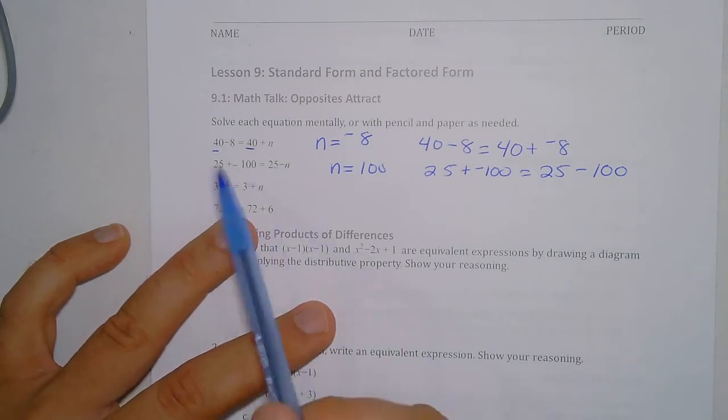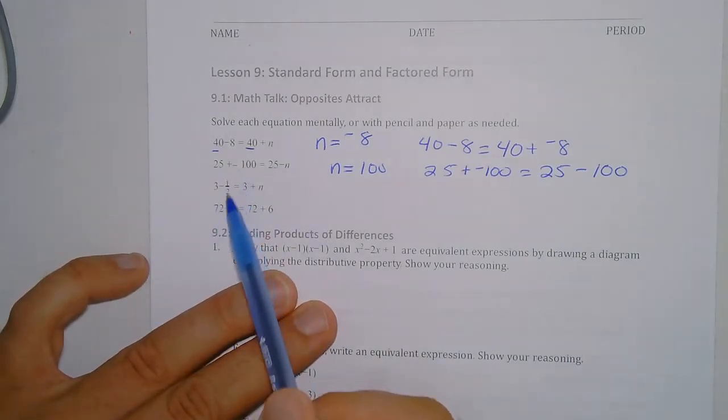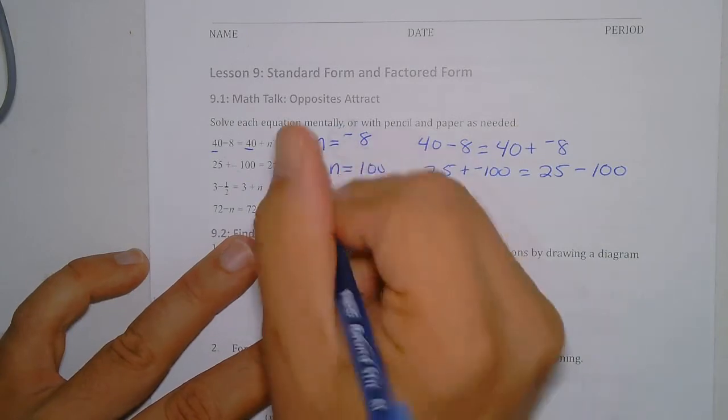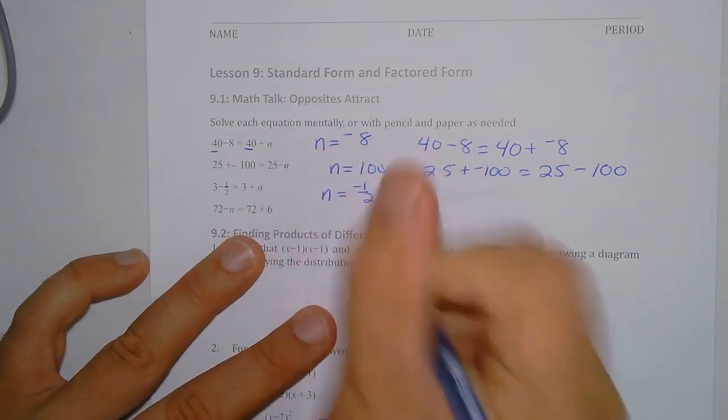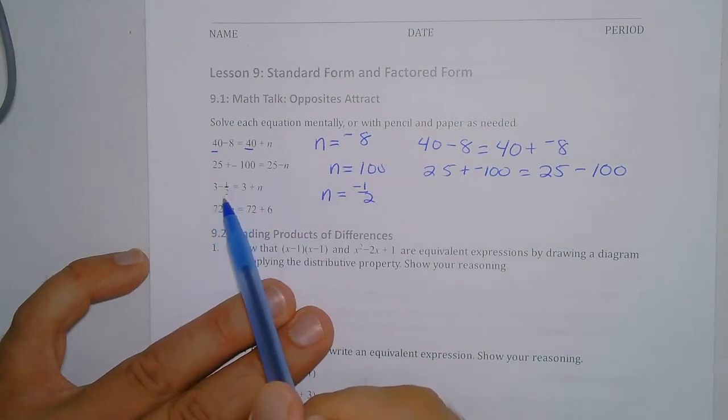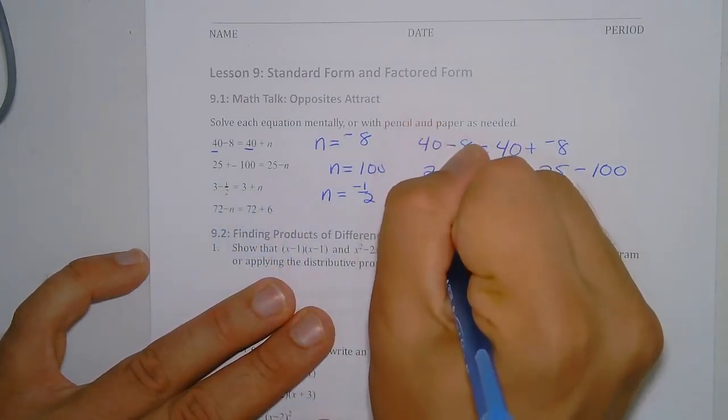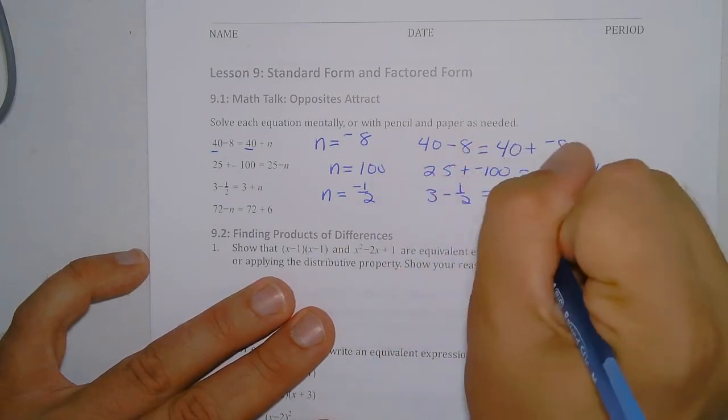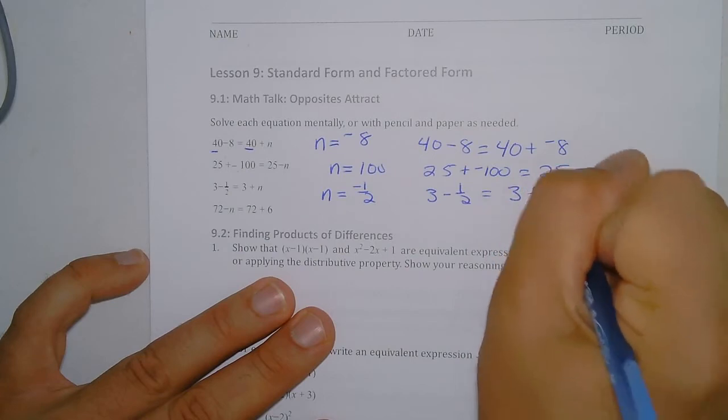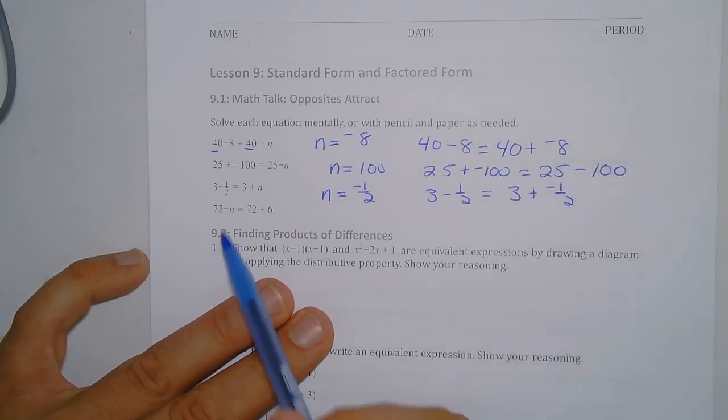So here, 3 - 1/2 is the same as 3 + n. Well, n would have to equal negative 1/2 because again, if I'm wanting to minus a half, I can add negative 1/2 and do that. So our equation there is 3 - 1/2 is the same as 3 + (-1/2).